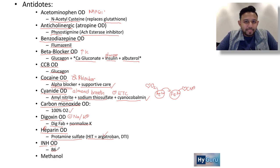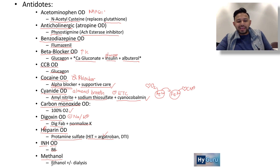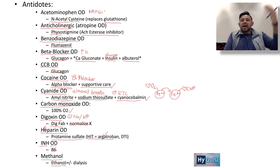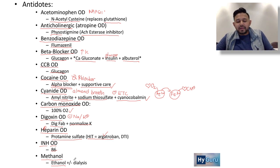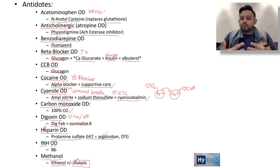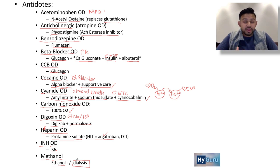Methanol poisoning — the classic teaching was to give ethanol because alcohol dehydrogenase competitively inhibits the metabolism of methanol. The current approach is more cautious about ethanol administration; instead, consider fomepizole to block alcohol dehydrogenase, and dialysis in severe cases.